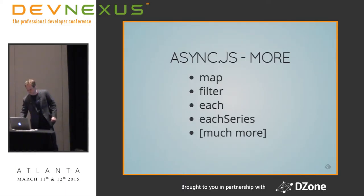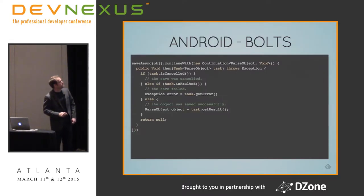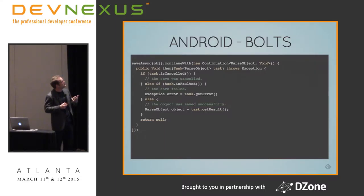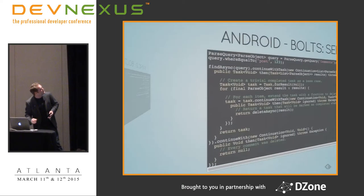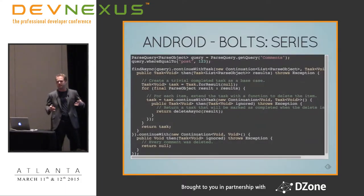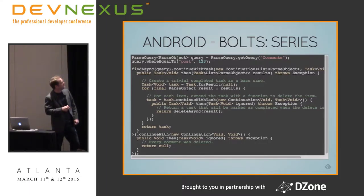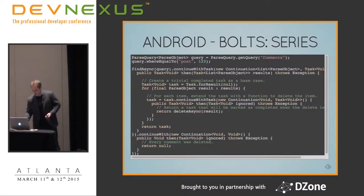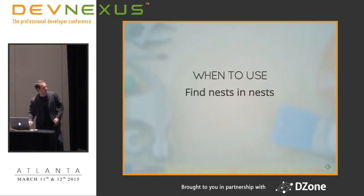On Android, there's a framework called Bolts by Facebook. You have continuations, which are somewhere between callbacks and promises - not true promises, but close. You have a Task object that either gets an error or a result. You create a task and keep chaining it with the next task using continueWith, so by the time you're done all your comments are deleted and you're ready to move on.